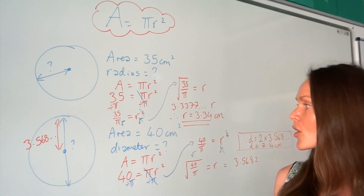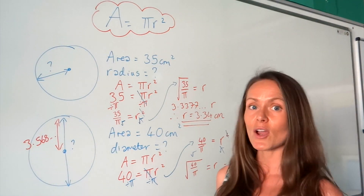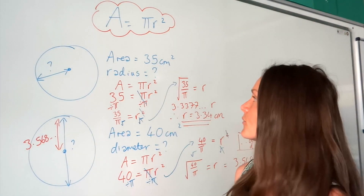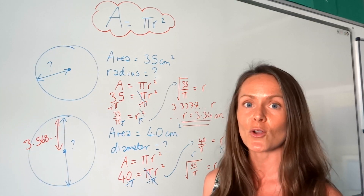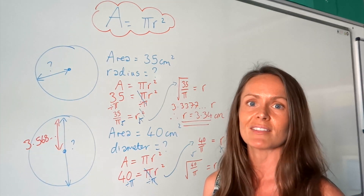So there we go — there's finding the radius and diameter of circles when you're given the area. Bye-bye.